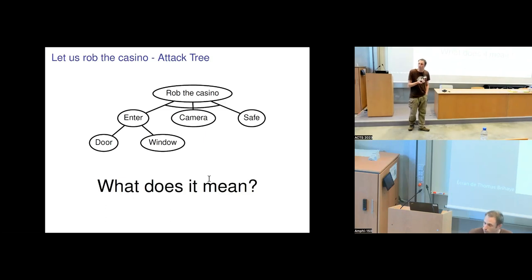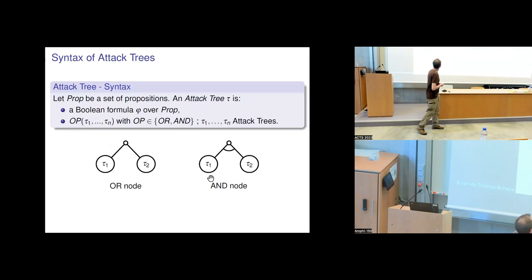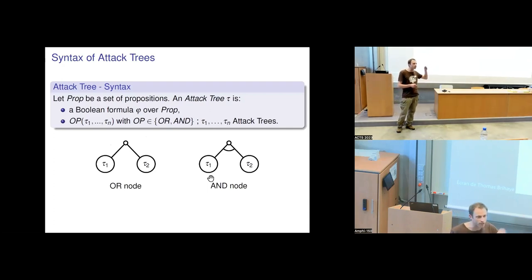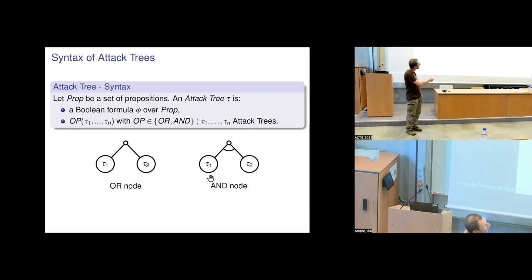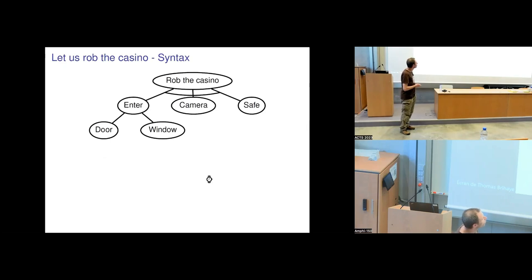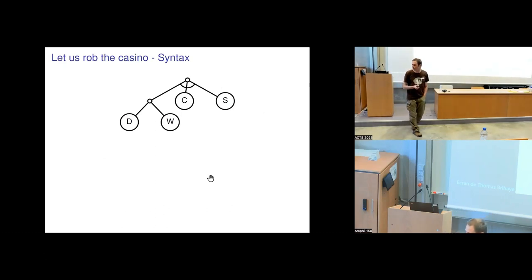We start with a formal definition for attack trees, beginning with the syntax. I fix a set of propositions, and an attack tree is either a Boolean formula φ over those propositions, or something made of an OR node or an AND node with attack trees below. To make this more formal: proposition D means the robber goes through the door, W means through the window, C means the robber deactivates the camera, and S means the robber is opening the safe.